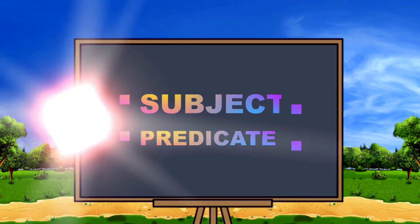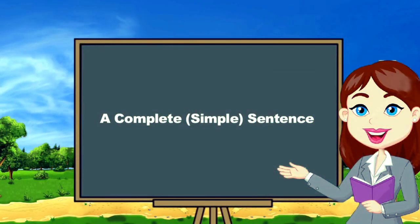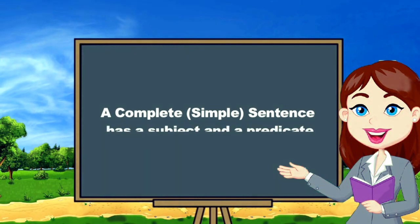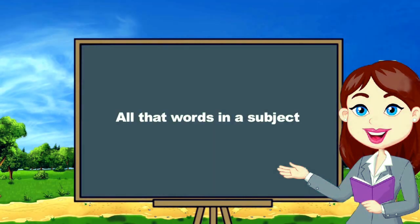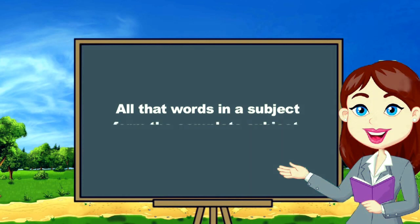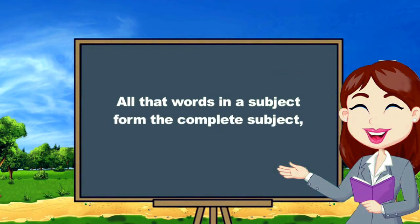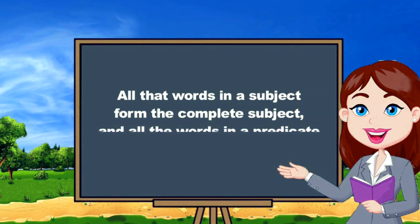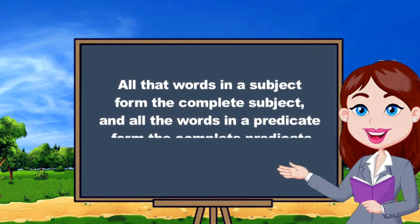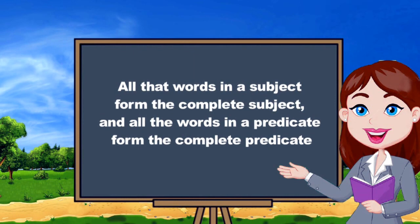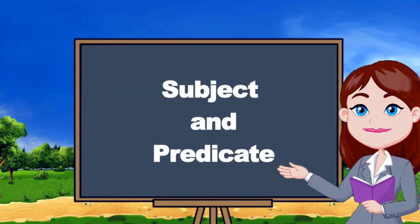Let's start. A complete simple sentence has a subject and a predicate. All the words in a subject form the complete subject, and all the words in a predicate form the complete predicate. Now let's see what is subject and predicate.